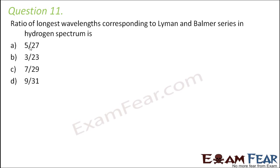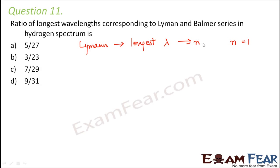Question number 11: Ratio of longest wavelengths corresponding to Lyman and Balmer series in hydrogen spectrum. For the Lyman series, N₁ is always equal to 1 and the higher energy level can be 2, 3, 4, 5 and so on. The longest wavelength corresponds to the minimum energy difference, which occurs when the higher energy level is N = 2. So the transition happens from N = 2 to N = 1.